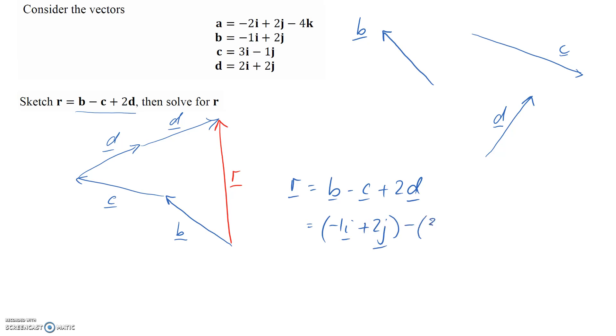c was this, and then plus 2d. So 2 times 2i plus 2j.